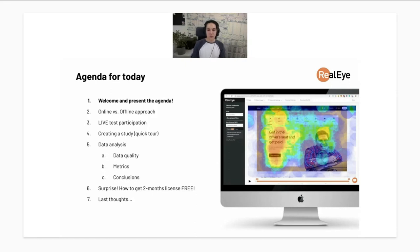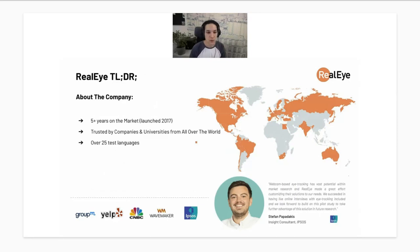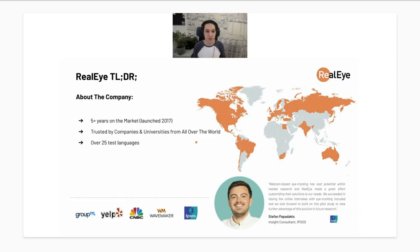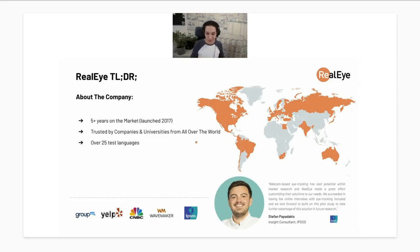A few words about the company: Real Eye was launched in 2017, so we've been on the market for over five years. We're trusted by many universities from all over the world, and our tests can be run in more than 25 languages. We serve both the academic and commercial sectors, including neuromarketing research, e-commerce, shopper research, and user experience research — both qualitative and quantitative types of studies.